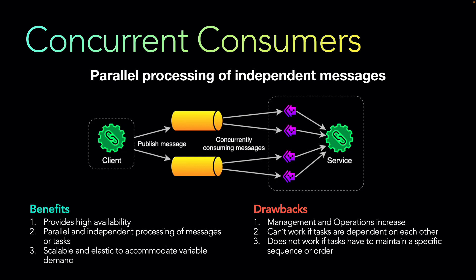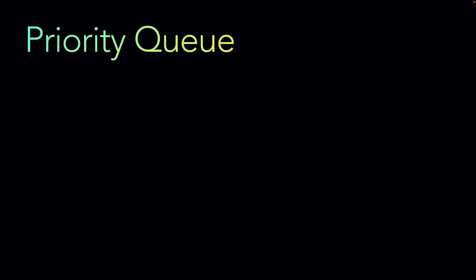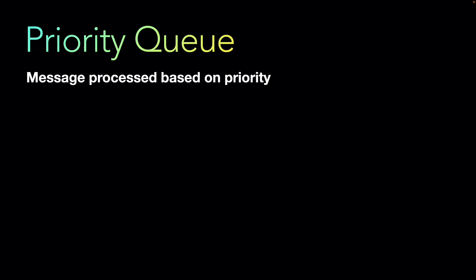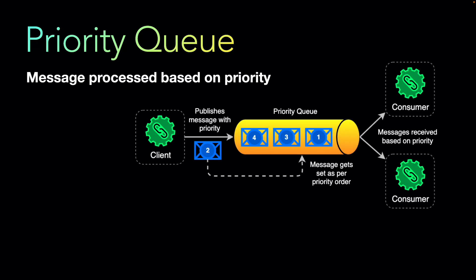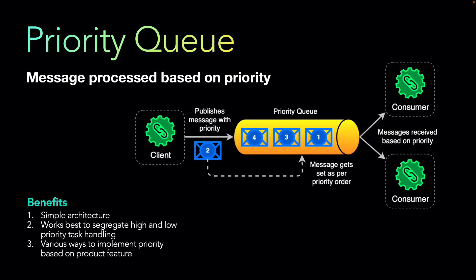The third pattern — priority queue — addresses sequencing by processing messages based on priority. Not all messages in the queue have the same priority; some are high, some lower. As shown in the diagram, the client publishes messages with a certain priority, and the priority queue arranges them in order. When a new message is published, the queue places it in the correct position, so consumers receive messages based on priority.